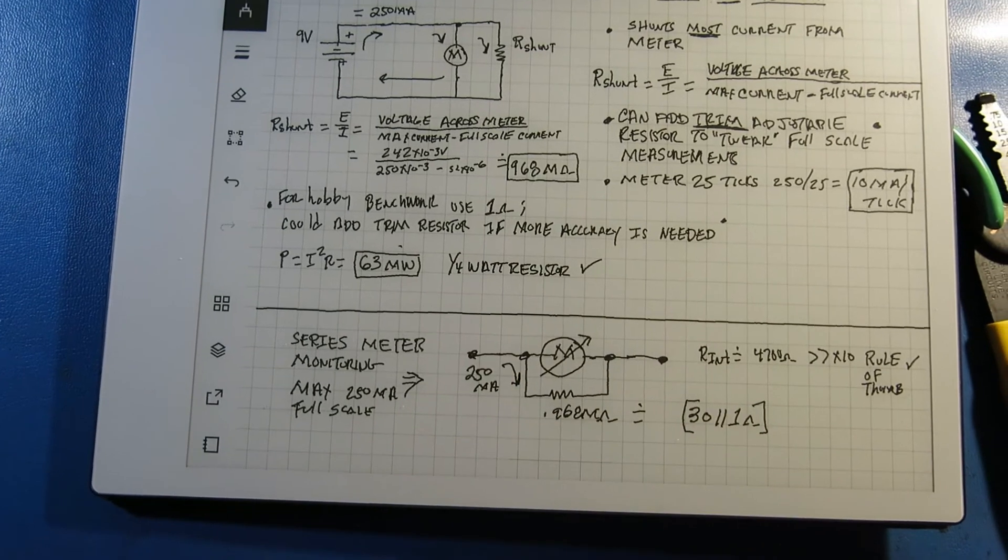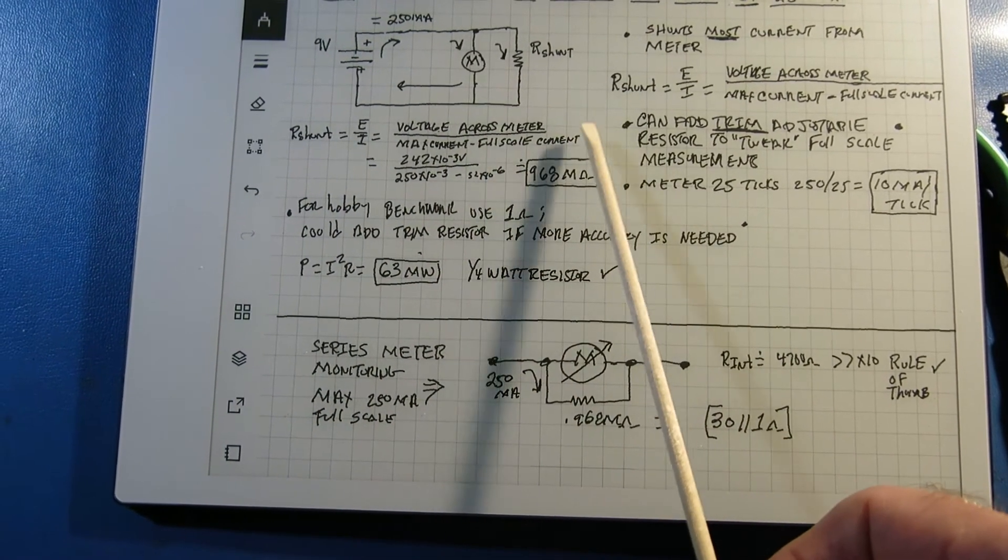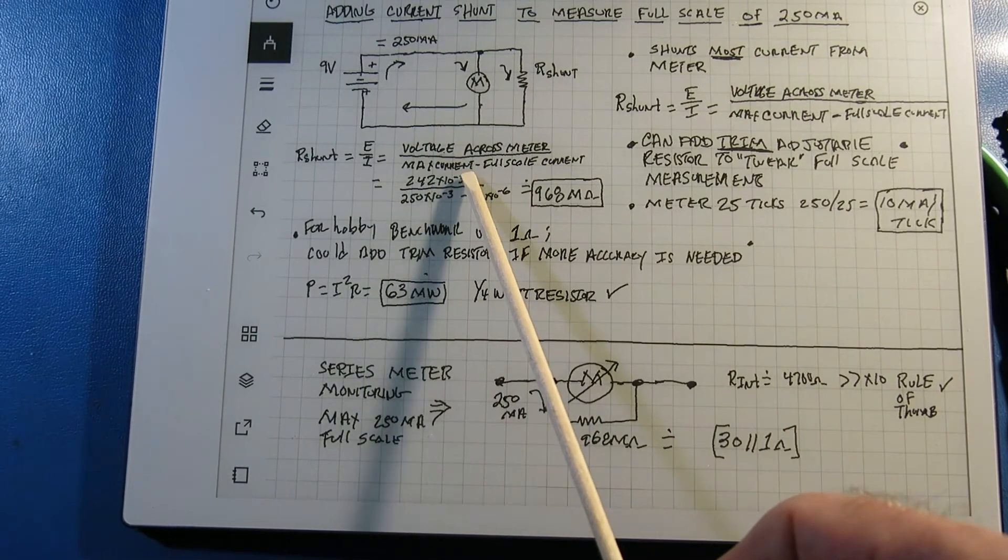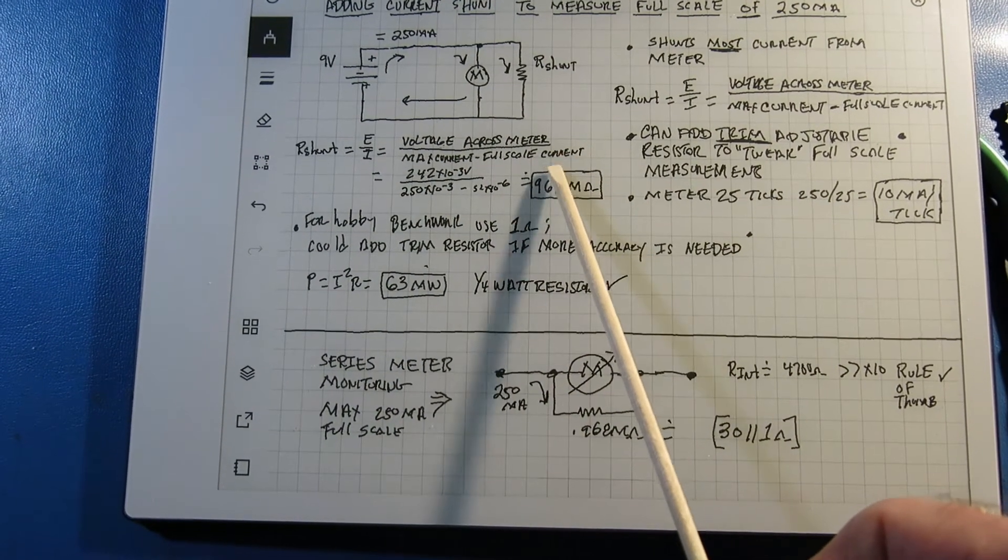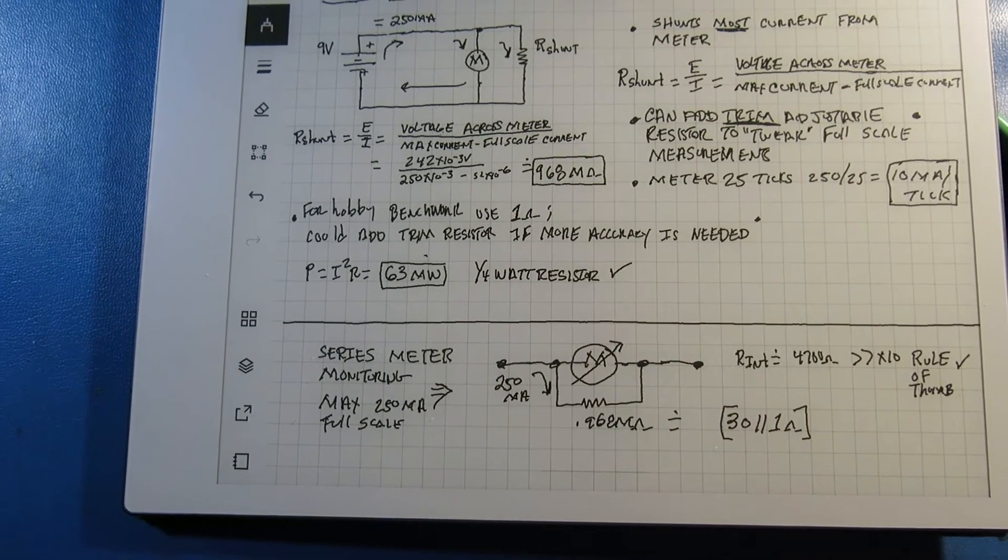Well, to calculate the value of the current shunt, it's the voltage across the meter at full-scale minus the max current of the meter and full-scale current. And if you do the math on that, it comes out to be 968 milli-ohms.